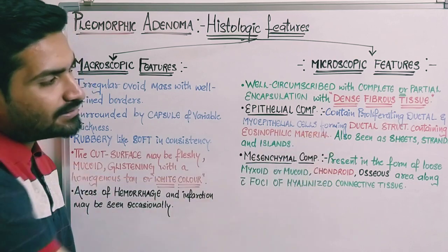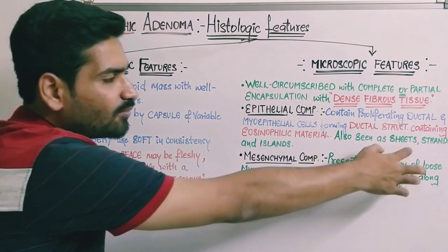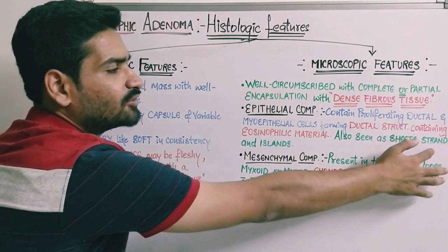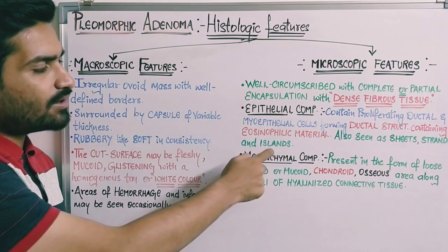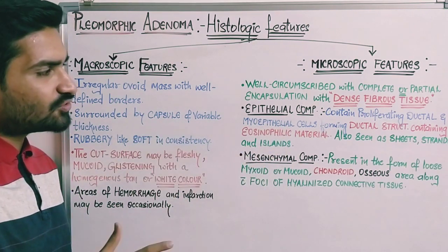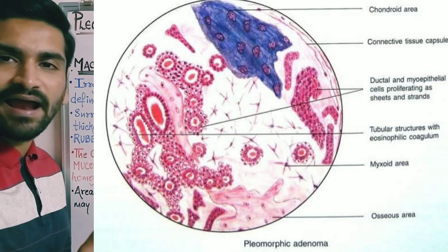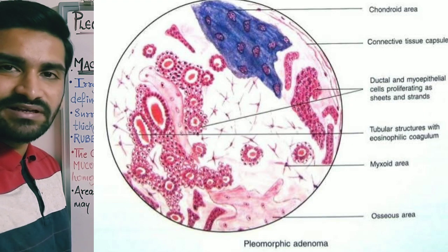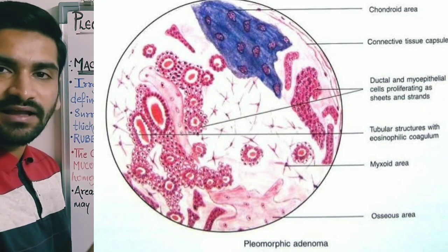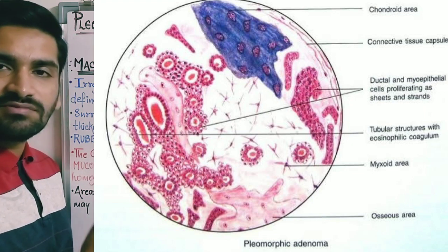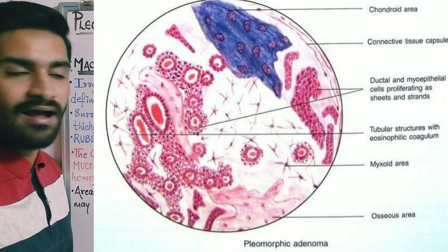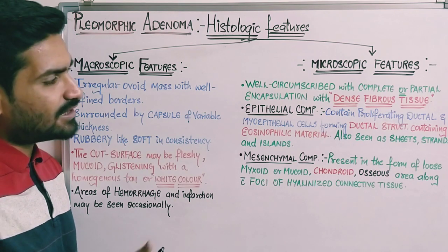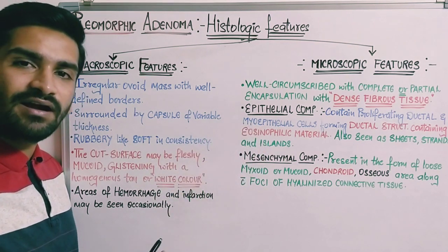The epithelial component may also be present in the form of sheets, strands, or islands. So the epithelial component includes ductal and myoepithelial cells forming ductal structures with eosinophilic material, as well as sheets, strands, or islands. The ductal cells are cuboidal in shape, while myoepithelial cells may appear spindle-shaped or have a plasmacytoid appearance.